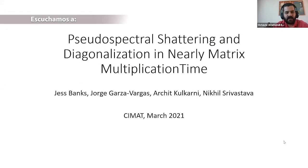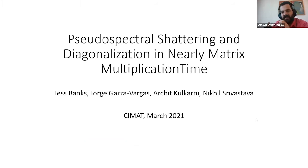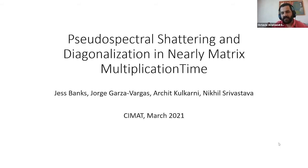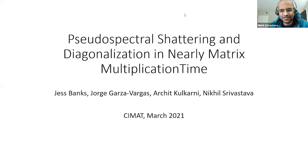Our speaker is somehow between mathematician and computer scientist, very prolific in both directions. He has been working in random graphs and recently in random matrices and numerical analysis. He is famous for solving the Kadison-Singer conjecture and for having proven the existence of Ramanujan graphs together with Spielman and Marcus. It is quite a pleasure to have him here. He will talk about work with James Banks, Jorge Garza-Vargas, and Archit Kulkarni about the pseudospectrum of shattering and diagonalization in nearly matrix multiplication time.